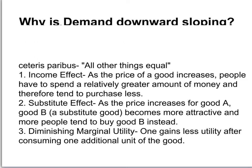The first reason why demand is downward sloping is the income effect. As the price of a good increases, people have to spend a relatively greater amount of money — more of their income — and therefore tend to purchase less. So at higher prices, people demand less. When the price of the good decreases, the opposite happens: you have to spend a relatively lesser amount of money, and therefore tend to purchase more and demand more.